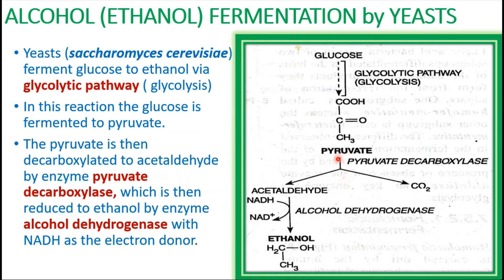You have to be very careful when writing the conversion from pyruvate to ethanol because this is the main step. After pyruvate is formed from glucose, in the presence of pyruvate decarboxylase enzyme, we get acetaldehyde and carbon dioxide as a byproduct. Then acetaldehyde, in the presence of alcohol dehydrogenase enzyme, gives us ethanol, with NADH acting as electron donor. The two key enzymes are pyruvate decarboxylase and alcohol dehydrogenase.